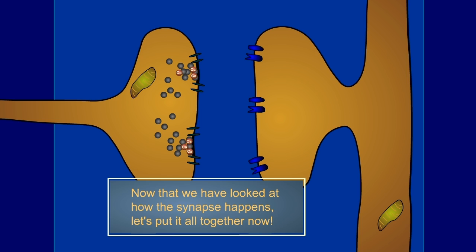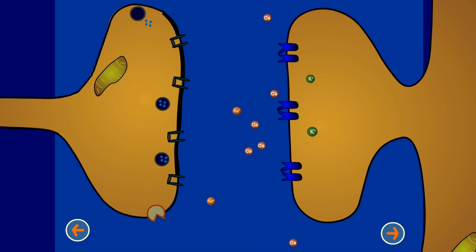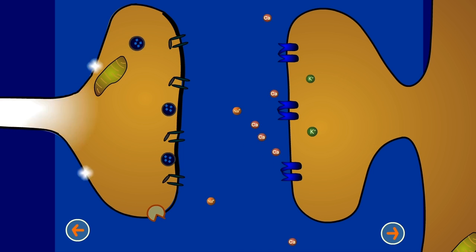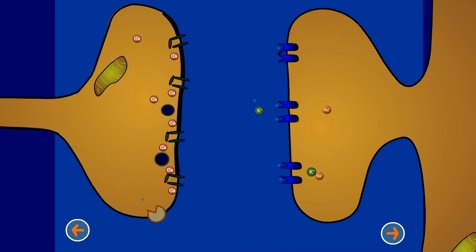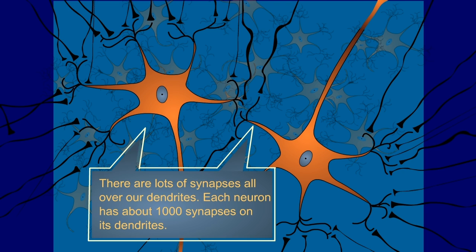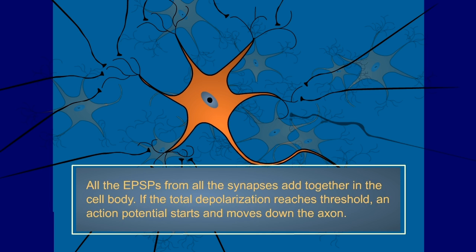Now that we have looked at how the synapse happens, let's put it all together. There are lots of synapses all over our dendrites. Each neuron has about 1,000 synapses on its dendrites. All the EPSPs from all the synapses add together in the cell body. If the total depolarization reaches threshold, an action potential starts and moves down the axon.